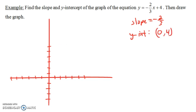Now it says to draw the graph as well, so how would we do that? The first thing I do is draw the y-intercept, which is up here at (0, 4). Then we need to draw a line with slope negative 2/3 that goes through this point. Remember that the 2 in the numerator is the rise and the 3 is the run.